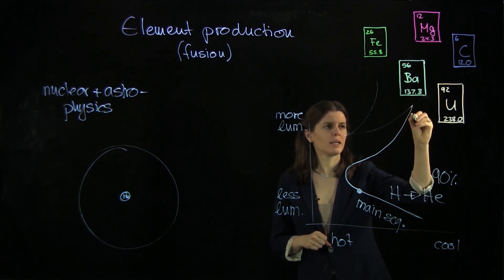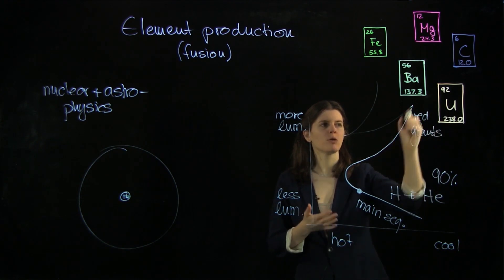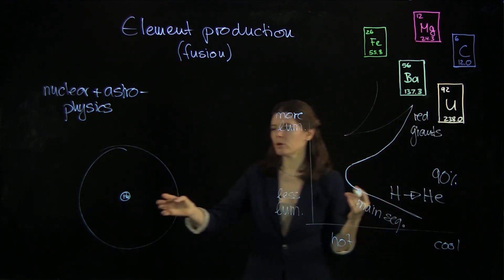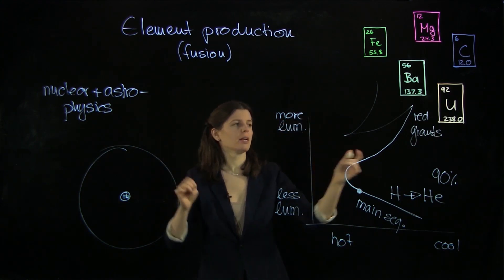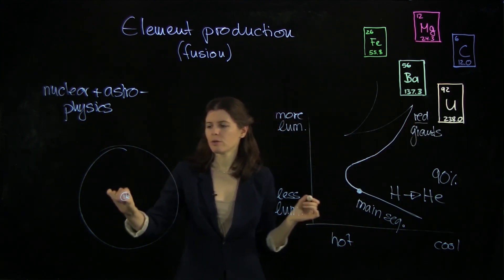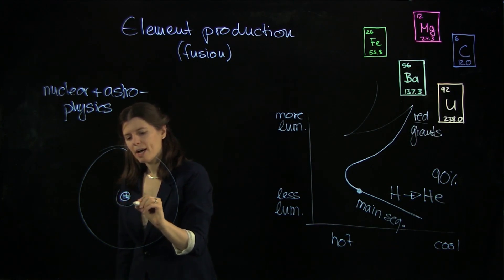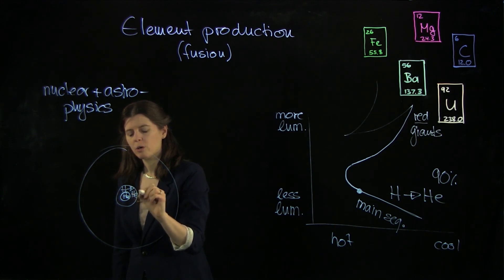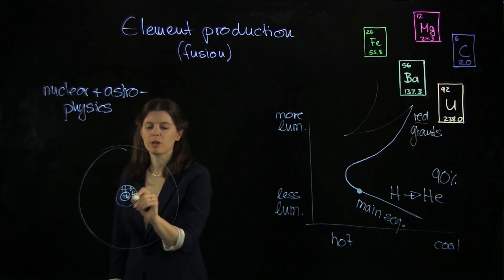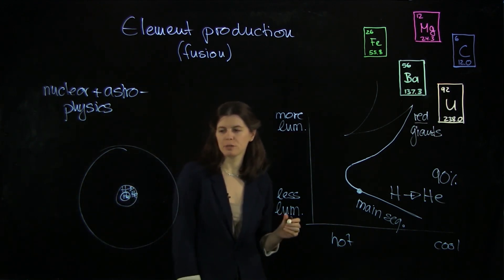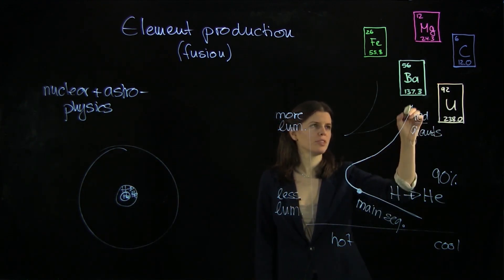And so what happens is the star actually inflates to counteract that and it will move up here and become very luminous and up here we have the red giants. They're called red giants because they're much bigger and more luminous but they're also cooler because they're bigger and so they turn red and so they have just a helium core and what's happening is in an outer shell here there is still hydrogen to helium burning going on in the shell and that provides a little bit of substitute energy, a little interim energy to the star as it moves up here.